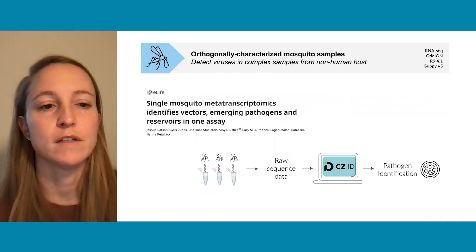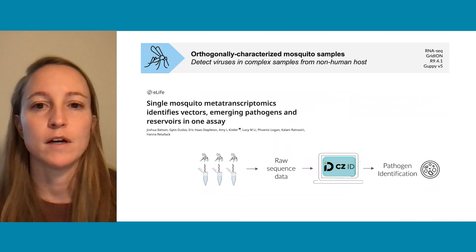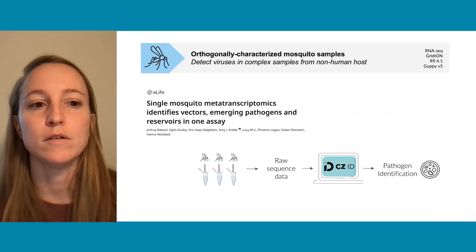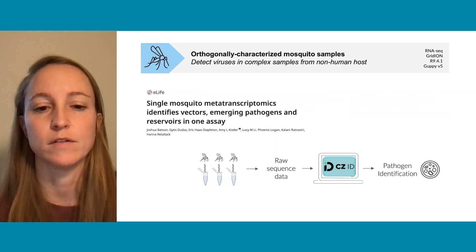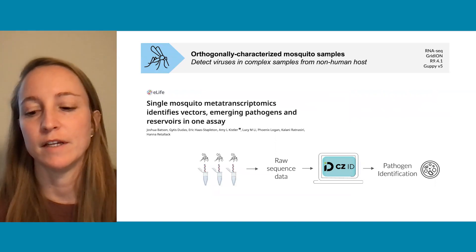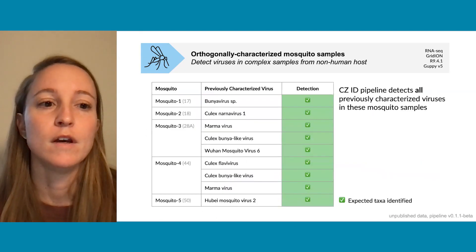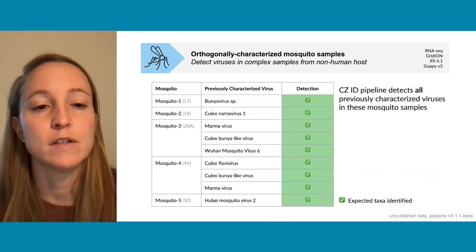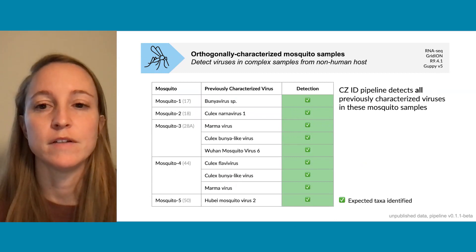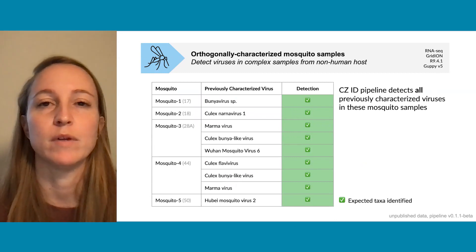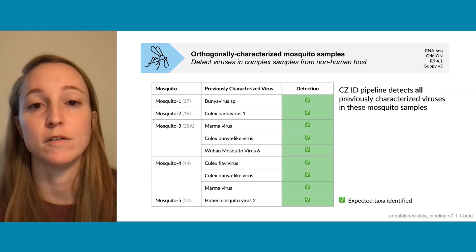In our final dataset, the orthogonally characterized mosquito samples, the data come from a paper on single mosquito metatranscriptomics, where individual mosquitoes were processed for sequencing and that data was evaluated using the CZID pipeline. Shown here for the five mosquitoes evaluated are the names of the previously characterized viruses, and the CZID pipeline is able to detect all of these previously characterized viruses in these mosquito samples.